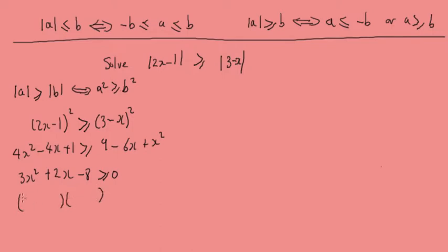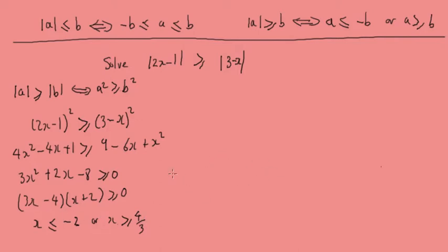Factorising gives us (3x minus 4)(x plus 2) is greater than or equal to 0. Solving for x, we find x is less than or equal to minus 2, or x is greater than or equal to 4 over 3.